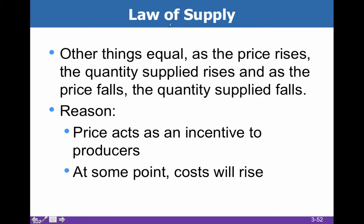So the law of supply, just like we have a law of demand, is very particular. Other things equal — ceteris paribus — as the price rises, the quantity supplied rises, and as the price falls, the quantity supplied falls. Remember we're talking about quantity supplied, not supply. Supply is the whole curve, whereas quantity supplied is any particular point on that existing curve.